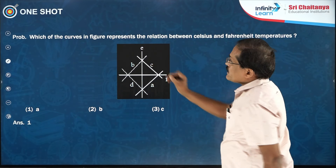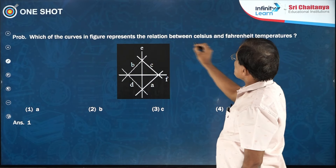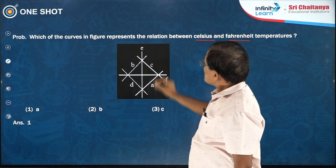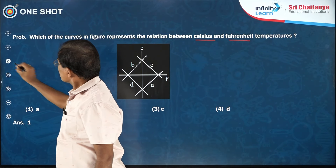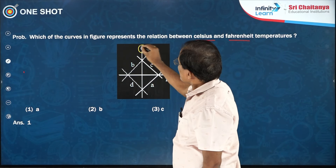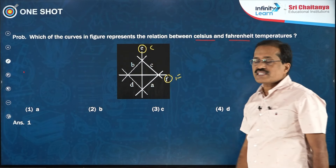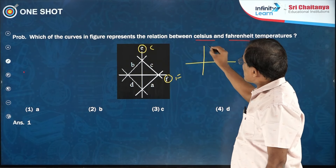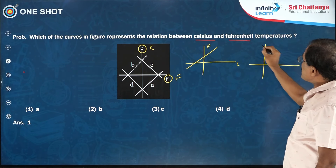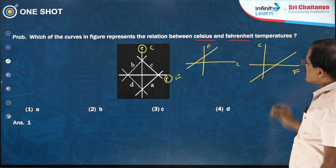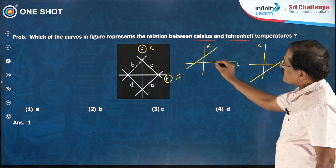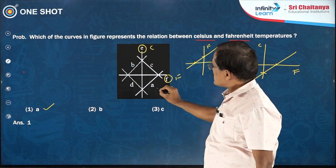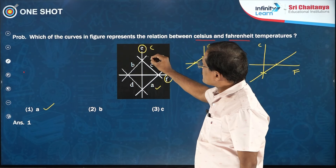For a graph representing the relation between Celsius and Fahrenheit temperatures: if Celsius is on the x-axis and Fahrenheit on the y-axis, you get a positive intercept on the Fahrenheit axis and a negative intercept on the Celsius axis. The correct graph option is A — a straight line with positive y-intercept and negative x-intercept.